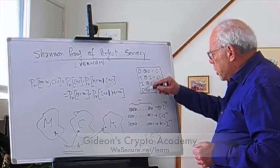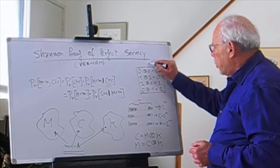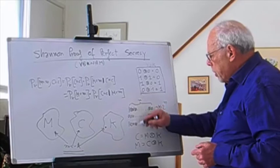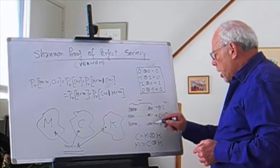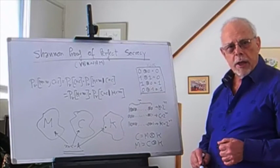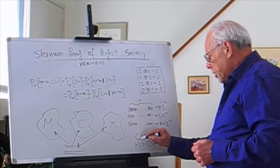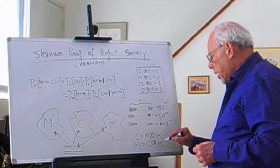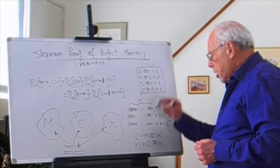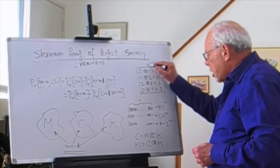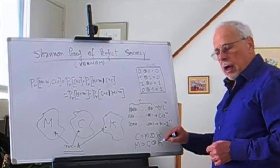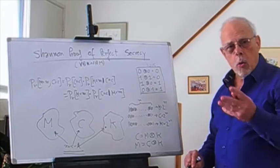Then you do this relationship which is called XOR, exclusive OR, bit by bit, and you get the ciphertext. So we write ciphertext equals message XOR the key, and the message equals the ciphertext XOR the key. Simple.